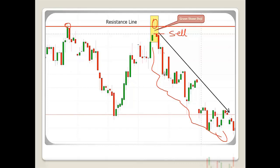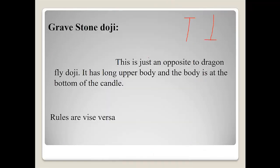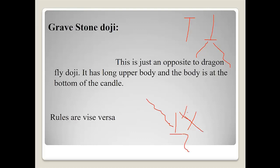If there is no resistance or support near the candle, you have to follow rule number one and wait for the next candle confirmation. So to summarize the rules: rule number one — wait for the next candle confirmation; rule number two — go for a buy or sell without confirmation if there is a support or resistance. Also note: the gravestone doji should be formed at the top of an uptrend — that represents sellers controlling the market. If the gravestone doji is formed at the bottom of a downtrend, the trade is invalid.